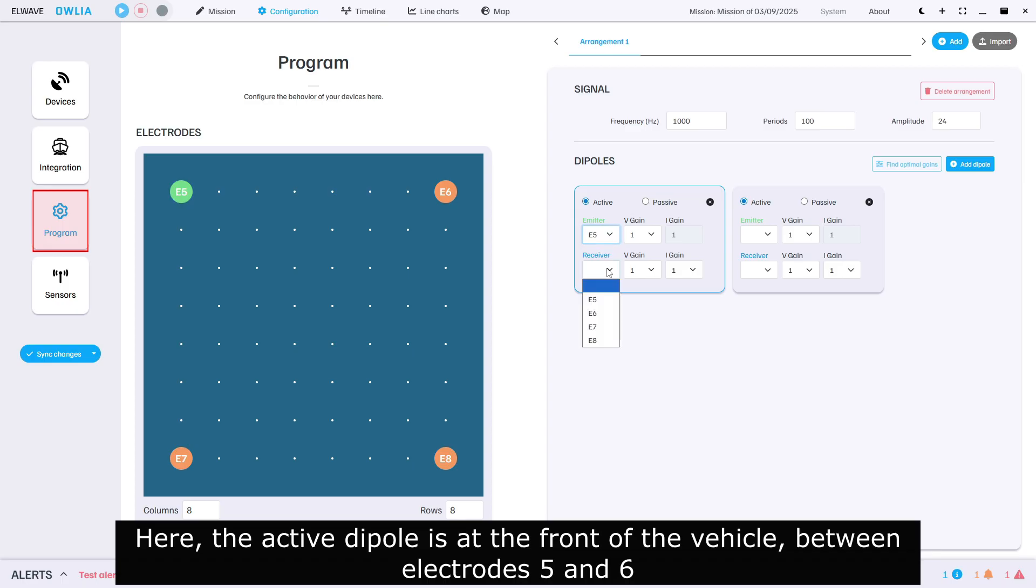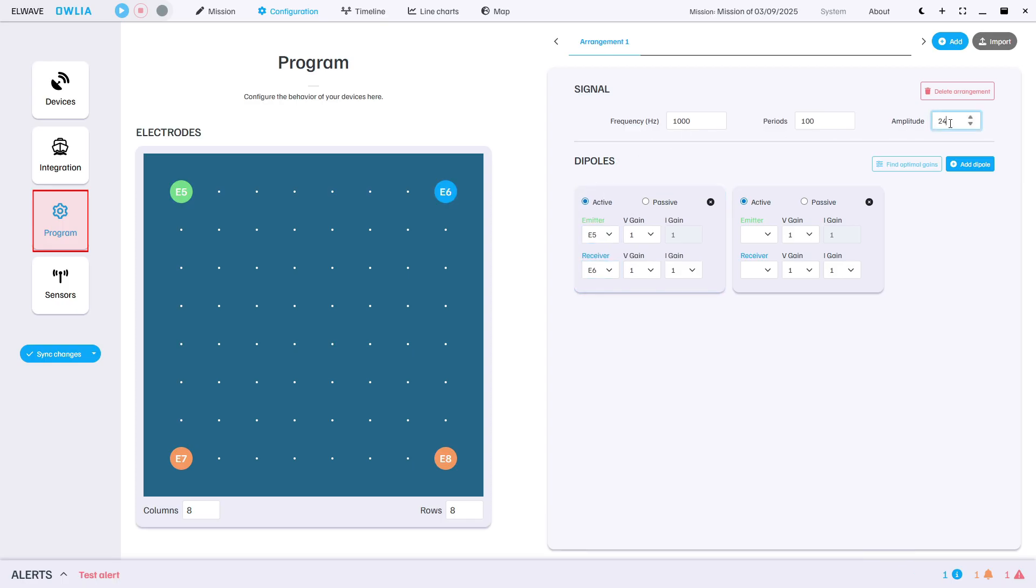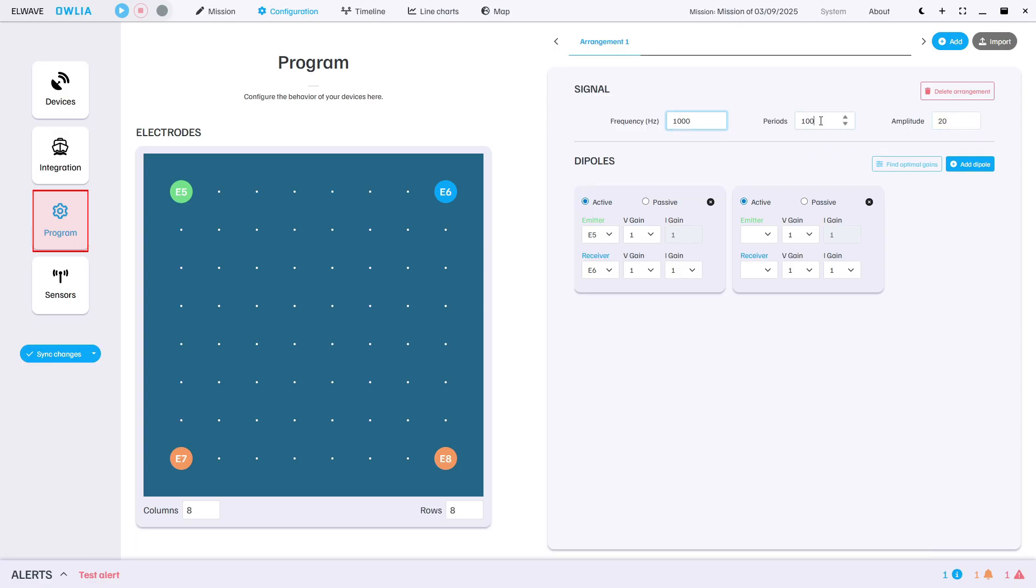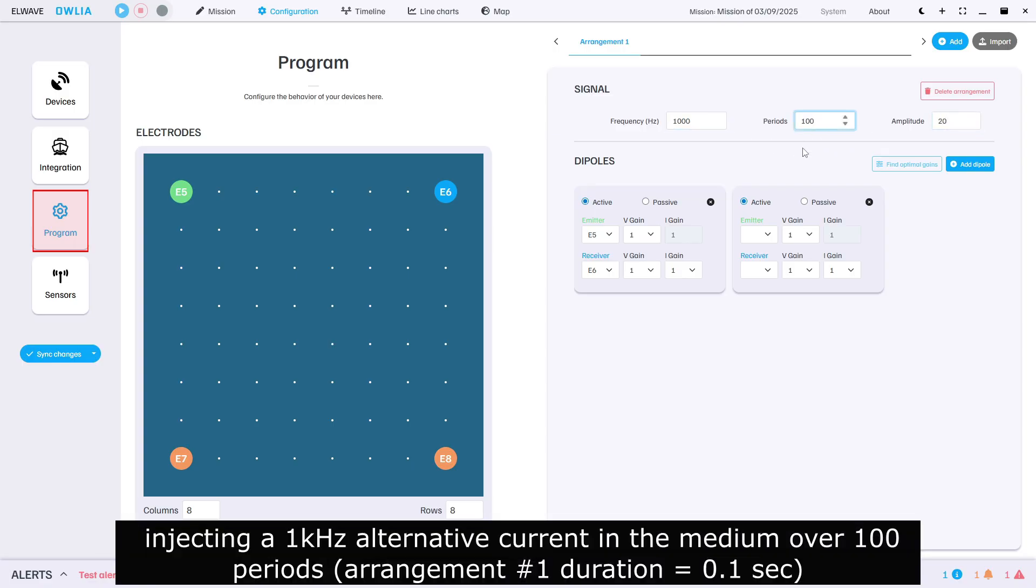Here the active dipole is at the front of the vehicle between electrodes five and six. A voltage of 20 volt will be applied between electrodes five and six, injecting a one kilohertz alternative current in the medium over 100 periods.